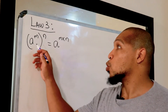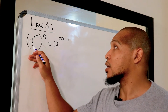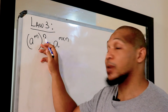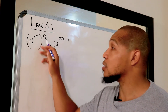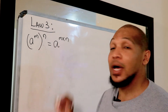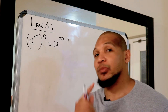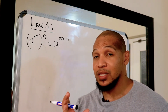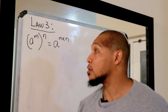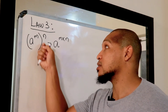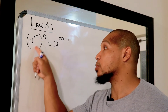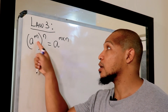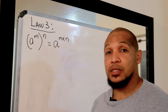Law number three: when we have a to the power of m in brackets and an exponent on the outside of the bracket, we multiply the exponents. Remember, it's not like law number one where we have two bases multiplied and then add. Here we have brackets, and the outside exponent n applies to both a and m, so we multiply the exponents.